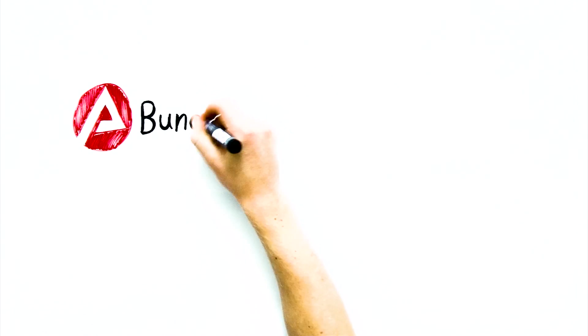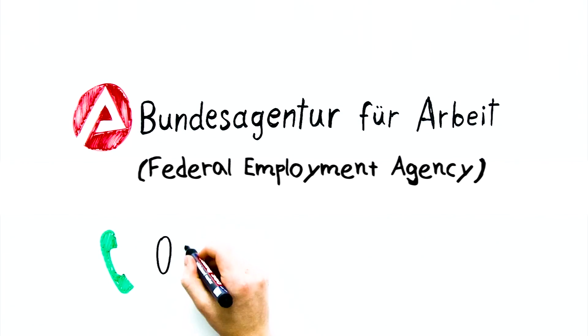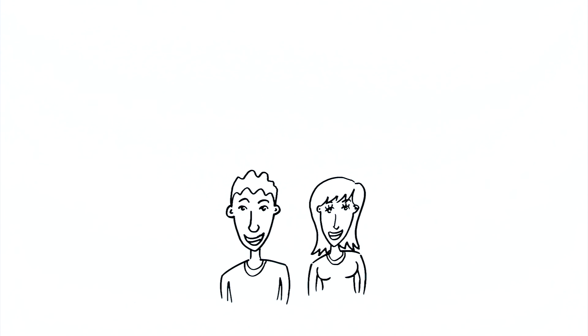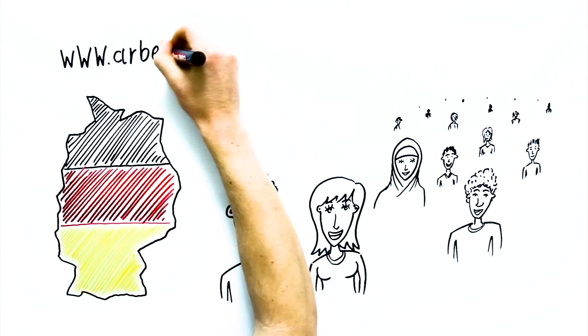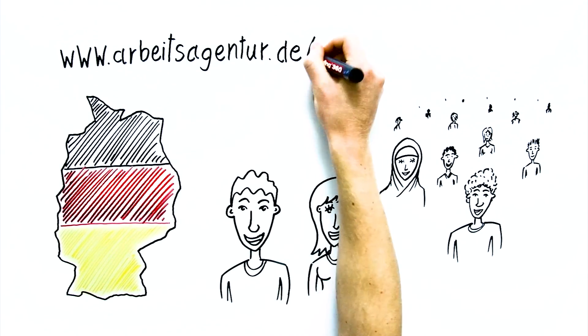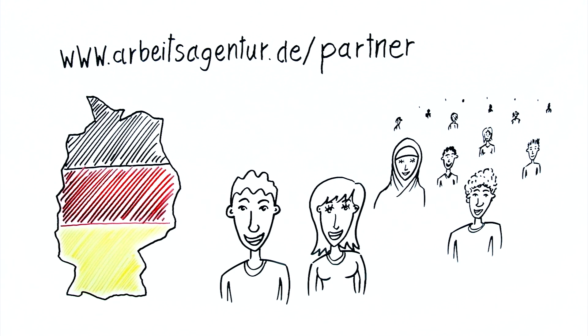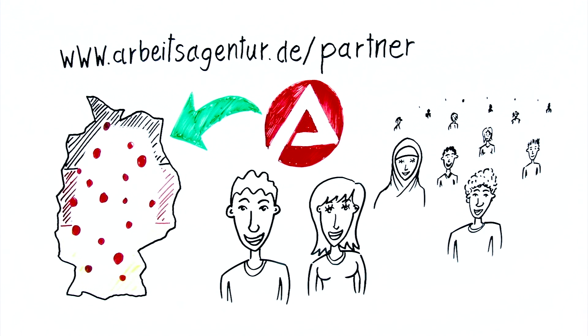You can call the Federal Employment Agency on 0800 4555500 free of charge and make an appointment for a careers counseling session. And at www.arbeitsagentur.de you can find the address of an employment agency near you.